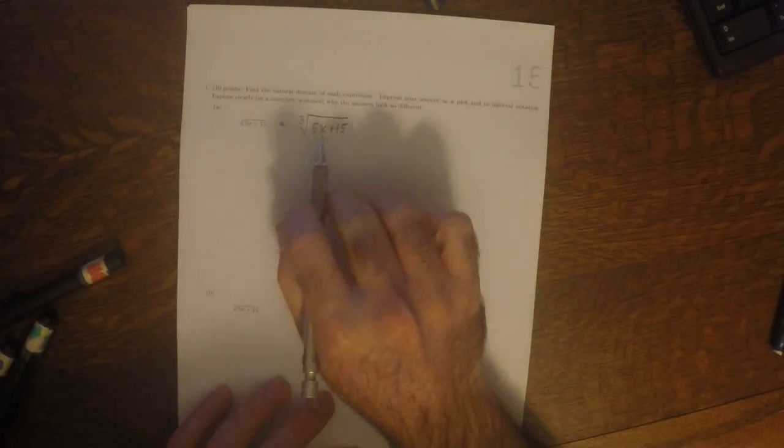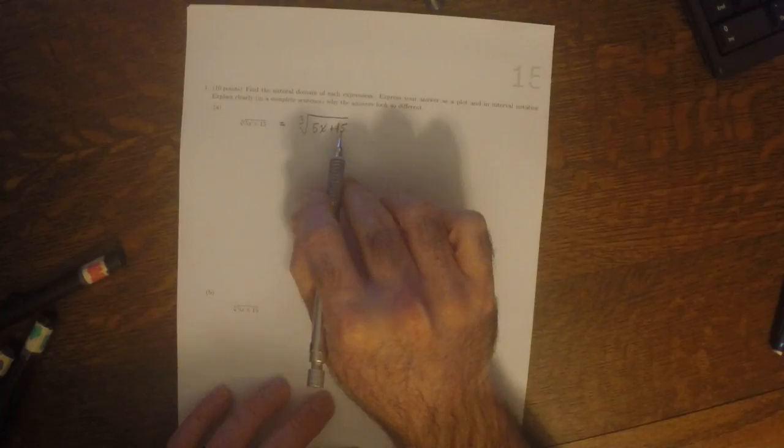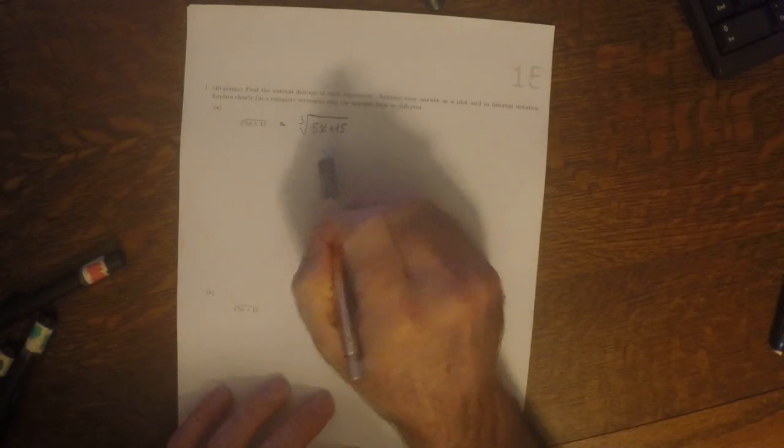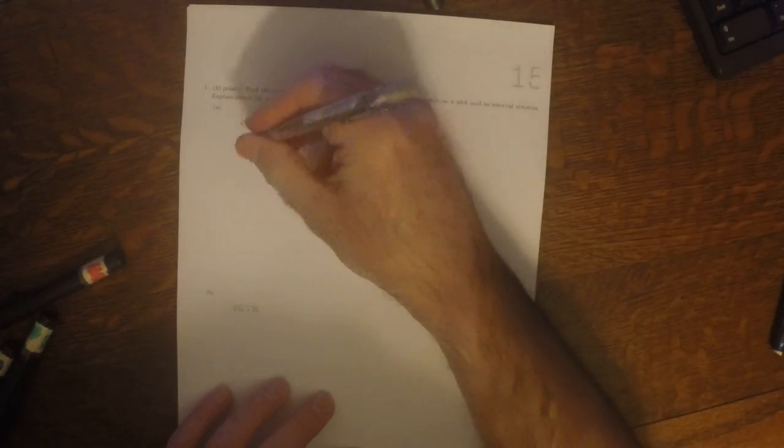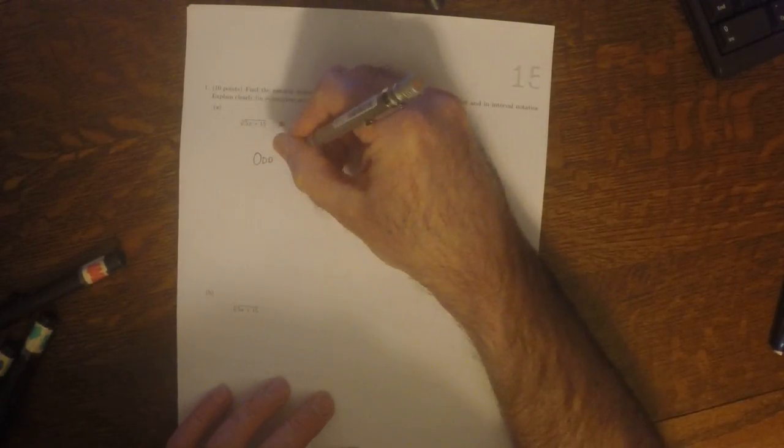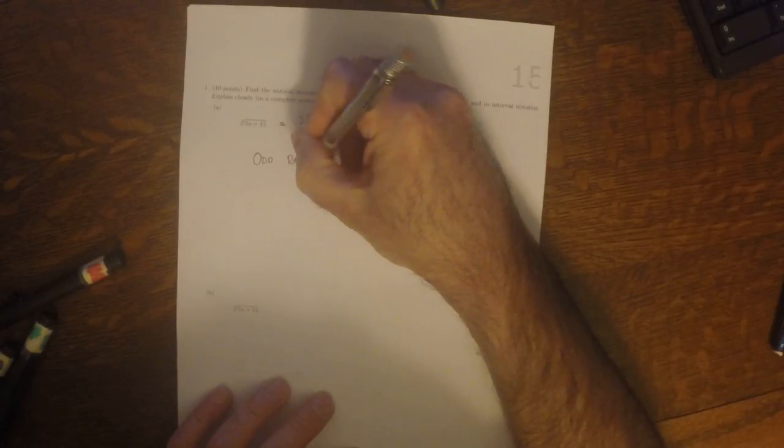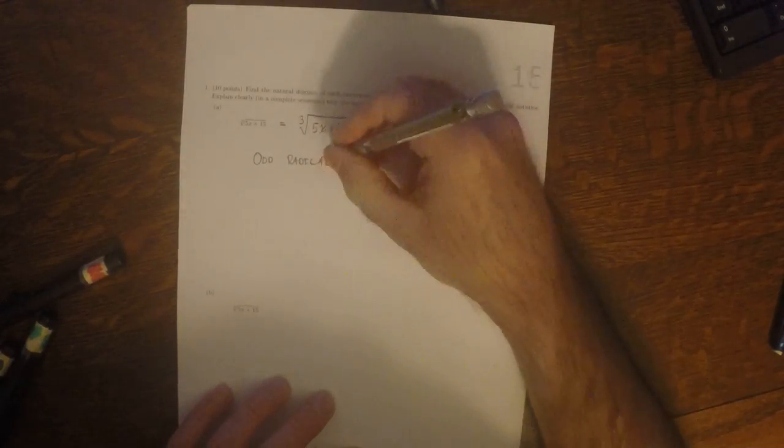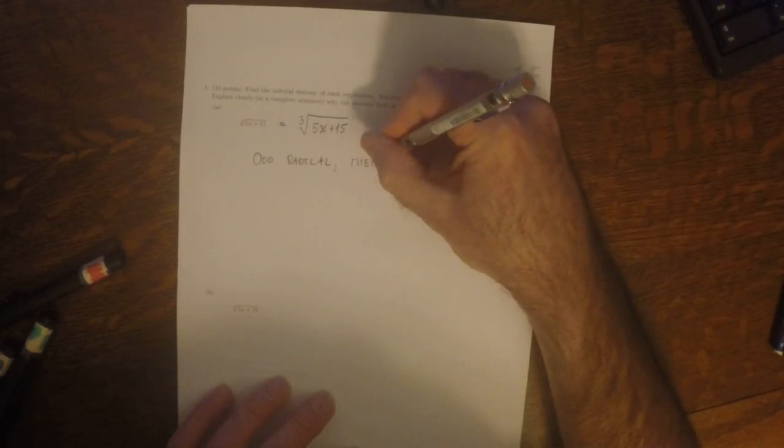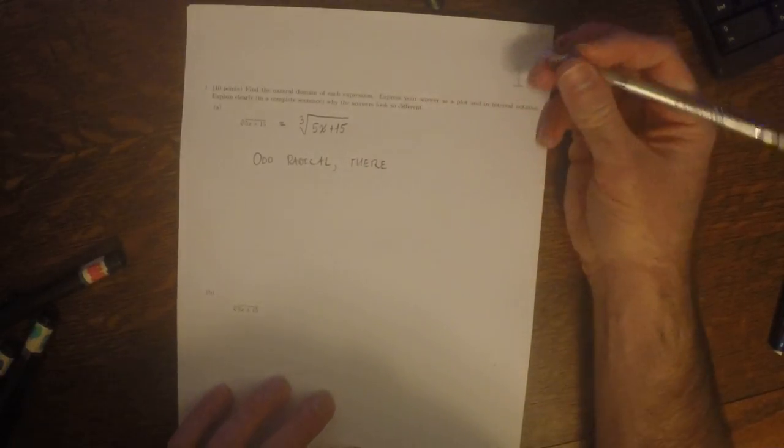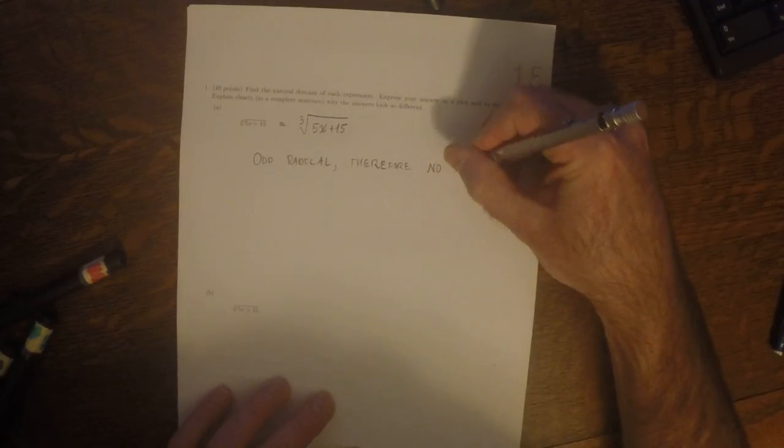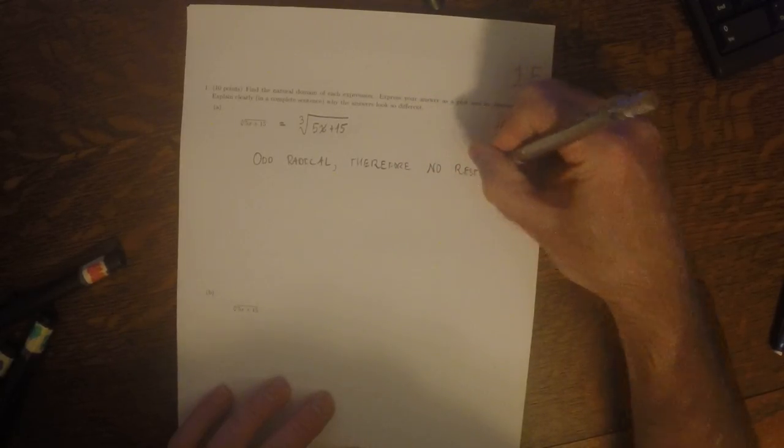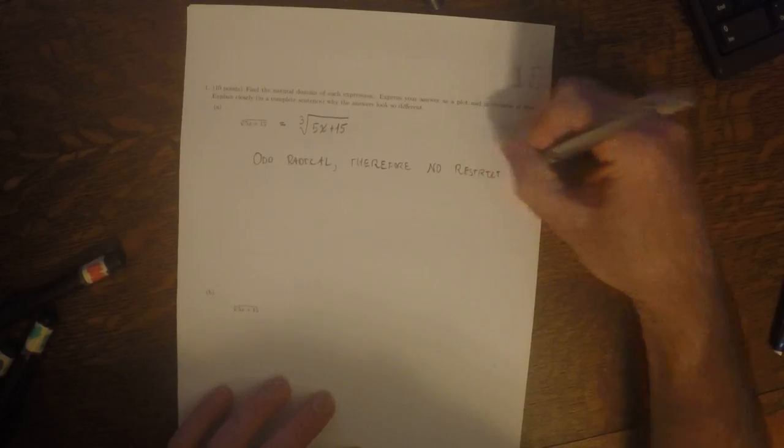Well, there's nothing wrong with 5x plus 15. So the question is, what about the fact that it's inside a radical? So, this is an odd radical. And therefore, there's no restriction on the argument.